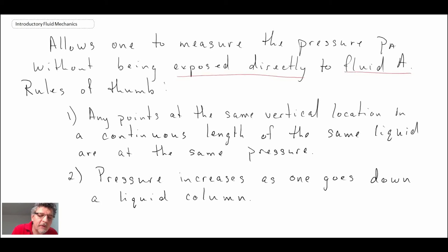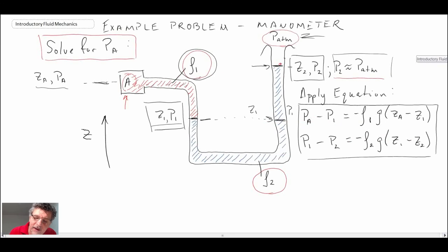Okay, so a couple of rules of thumb we have here. The first one pertains to the fact that we were able to jump across the U-tube manometer. What it says is any points at the same vertical location in a continuous length of the same liquid are at the same pressure. So if we look back at our schematic, that is what enabled us to do this jump across here.